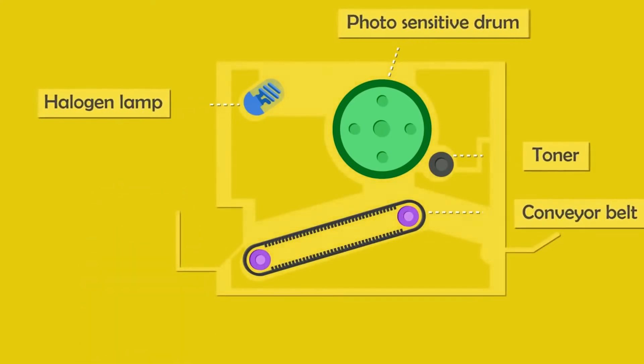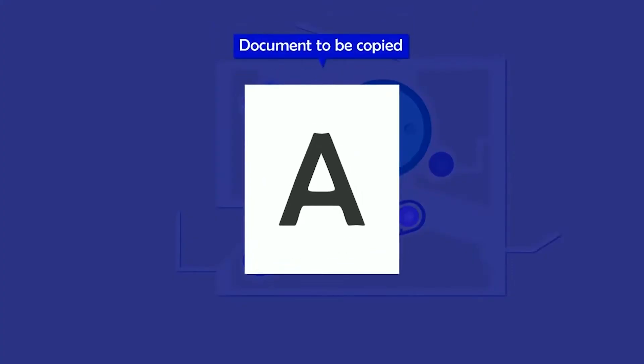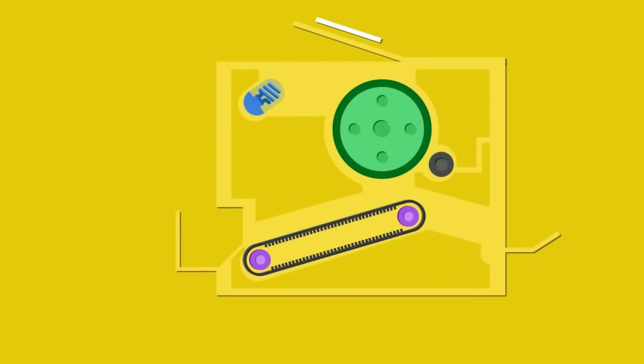When you place the document you want to photocopy upside down and press the start button, an intense beam of light scans across the document. As you can see in the video, this light is then reflected and cast onto a photosensitive drum.